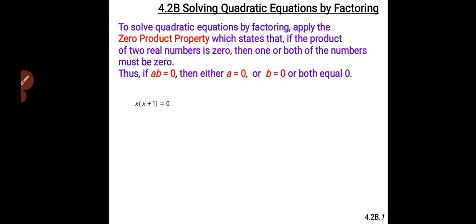Let's look at this example. If we have X open bracket X plus one close bracket is equal to zero, then by the zero product rule, this means that X is equal to zero or X plus one is equal to zero. Then X is equal to zero, or we take the plus one to the other side, making X equal to minus one.